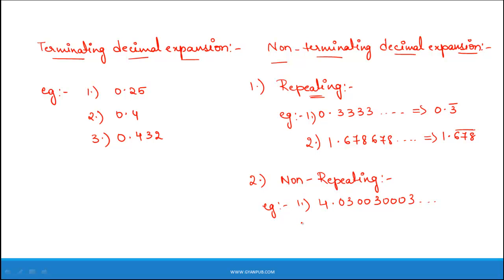Let us take another example: 1.15, 1.15, 1.15 and so on. Here also the decimal expansion is non-terminating and also non-repeating.